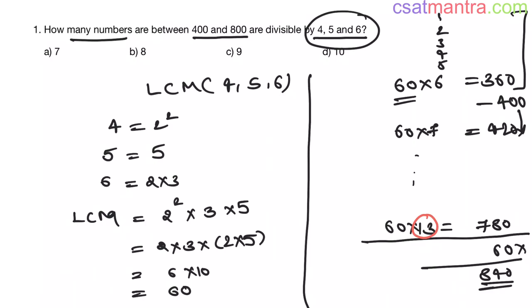There are 13 numbers which are multiples of 60 below 800. Out of them, there are 6 numbers which are less than 400. We need the numbers between 400 and 800, so I am subtracting these 6 numbers out of 13. 13 minus 6 is 7, so our answer is 7. Questions will be this simple with a little bit of thinking.